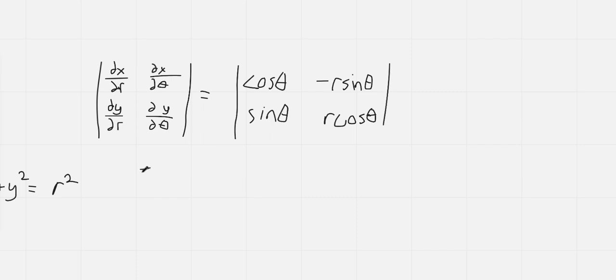Then this comes out to be r cosine squared of theta, which is the product of these two entries, minus negative r sine squared of theta.